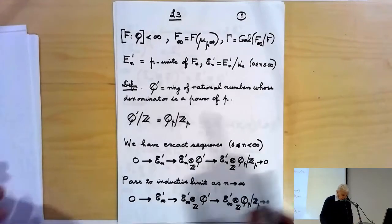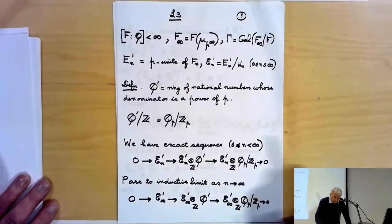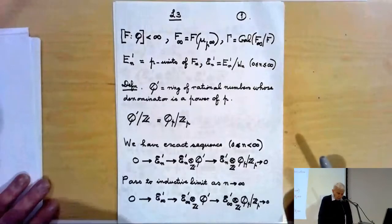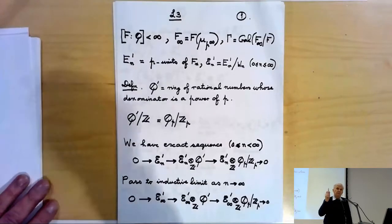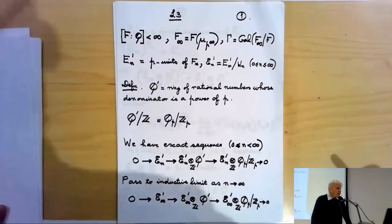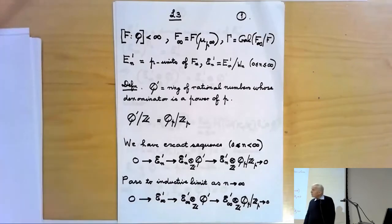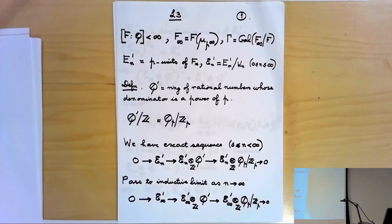E_n' will be the p-units of F_n — the units of the ring of integers localized at the primes above p. The curly E_n' is E_n' divided by the appropriate torsion subgroup. We proved last time that even for n equal to infinity, it is a free abelian group. What we want to prove is that the Galois group of the field obtained by adjoining to F∞ the p-power roots of all elements of E∞' has rank r_2.